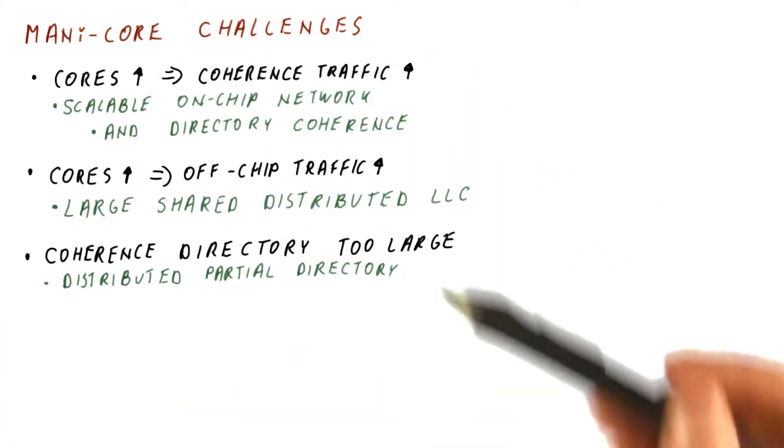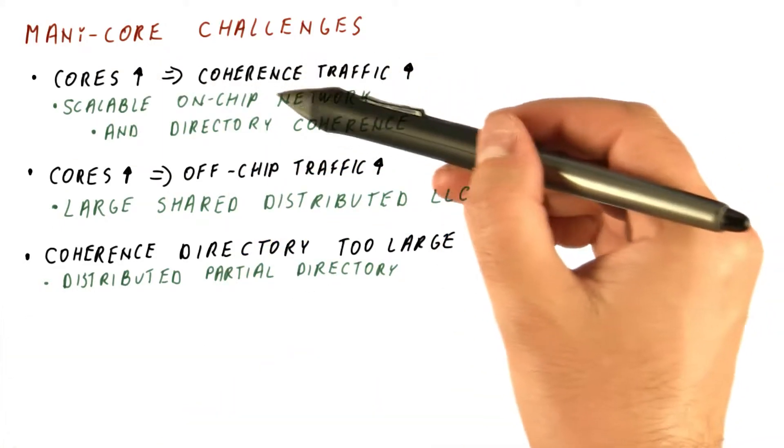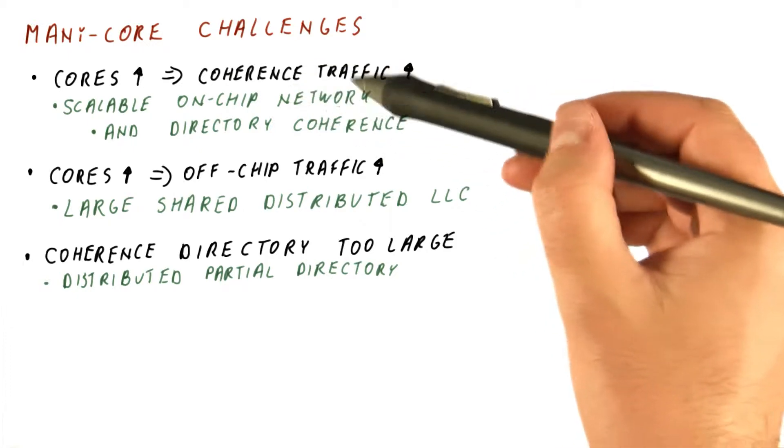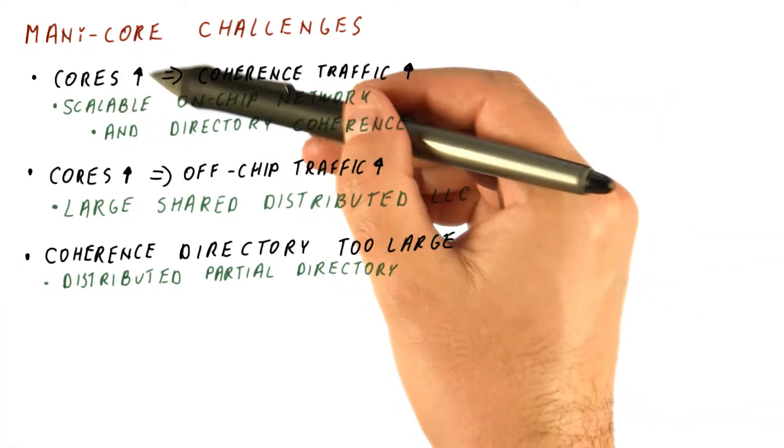So going back to our many-core challenges, we have seen that there are solutions to the increase in the on-chip coherence traffic as the number of cores grows.